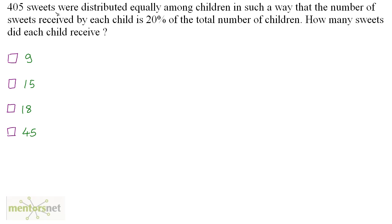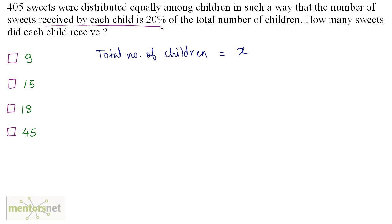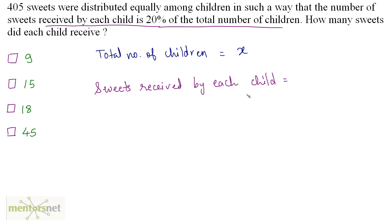405 sweets were distributed equally among children such that the number of sweets received by each child is 20% of the total number of children. How many sweets did each child receive? Let the total number of children be X. Sweets received by each child = 20% of X = 20/100 × X.